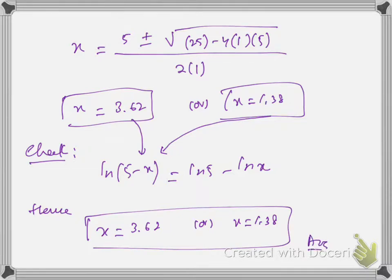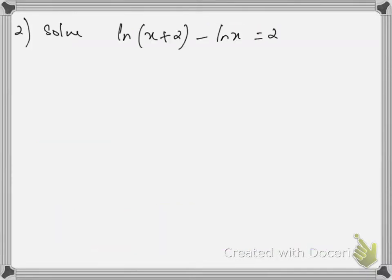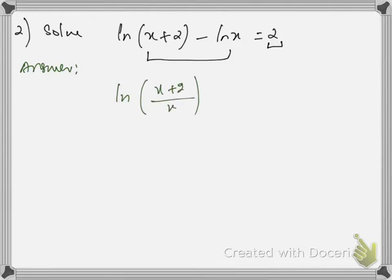Now let's do another example. In this example, we have to convert the number into the form of ln so that we can equate the logs on both sides. We use the quotient law here to convert two logs into a single log. By using the quotient law on the left side we have ln(x / (2x)). We can write the right-hand side as 2·ln(e), since ln(e) = 1, in order to express 2 as a log form.